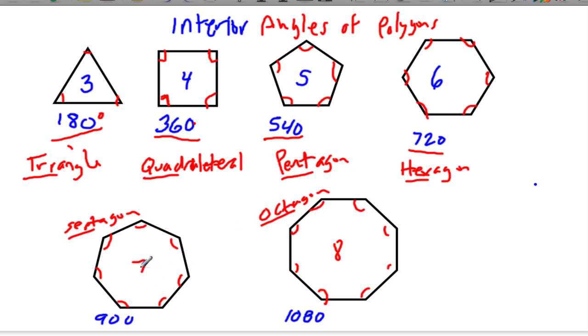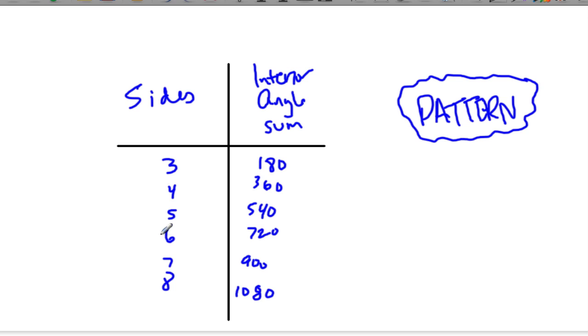What we're asking you to do is to look at a pattern that occurs between the number of sides of a polygon and the interior angle sum. So to figure this out, I just made a little table. In one column we have the number of sides in each polygon, and in the other column we have the measure of the angles, interior angle sum, what they have to add up to.